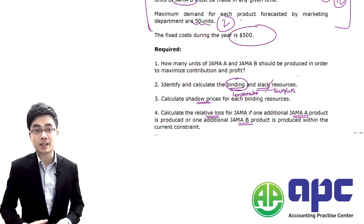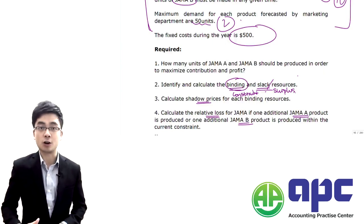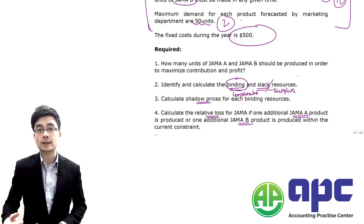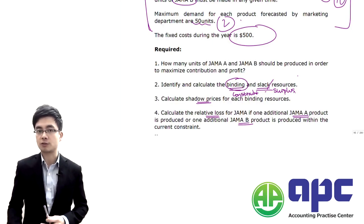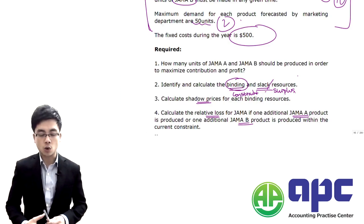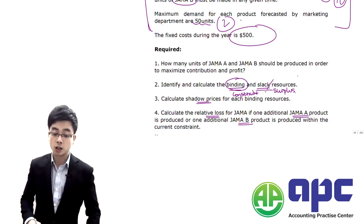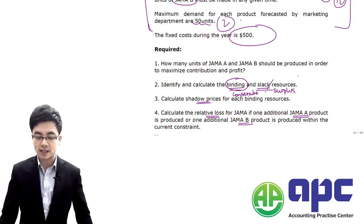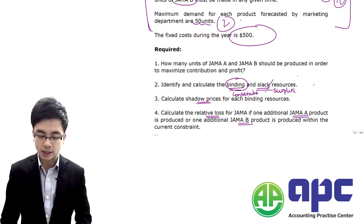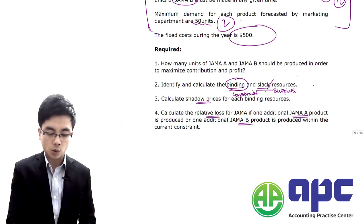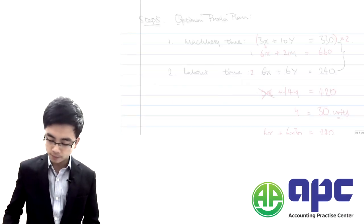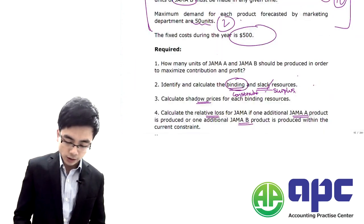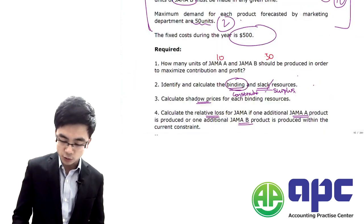Welcome back. Now let's see requirement two of the JAMA question, working out the linear programming using a graphical method. In this case, we are going to identify and calculate the binding or the slack resources. We know from requirement one that we are going to produce 10 units of JAMA A and 30 units of JAMA B.